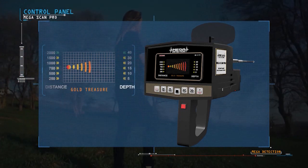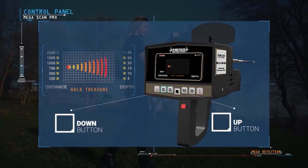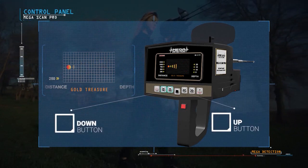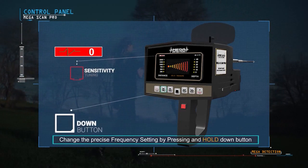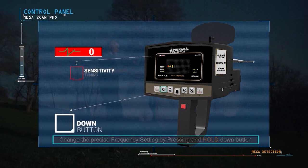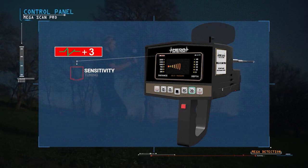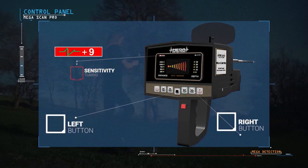Switching between distances and depths through up and down buttons. You can change the precise frequency setting by pressing and holding the down button until hearing a different tone, and changing the value with the right and left buttons.